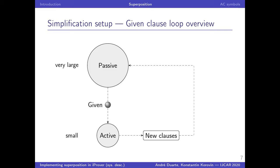So in general, the passive set is much larger than the active set, which means that operations on clauses in the passive sets are slow and on the active set are much faster. So keeping this in mind, we will have to keep this in mind when we decide how we want to do simplifications.